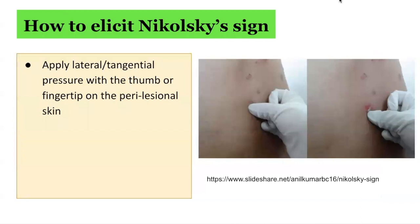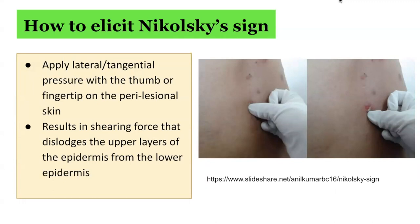In order to elicit Nikolsky sign, one must apply lateral or tangential pressure with the thumb or fingertip on perilesional skin. The result is a shearing force that dislodges the upper layers of the epidermis from the lower epidermis and induces a subsequent blister in the area or shedding of the surface of the skin.